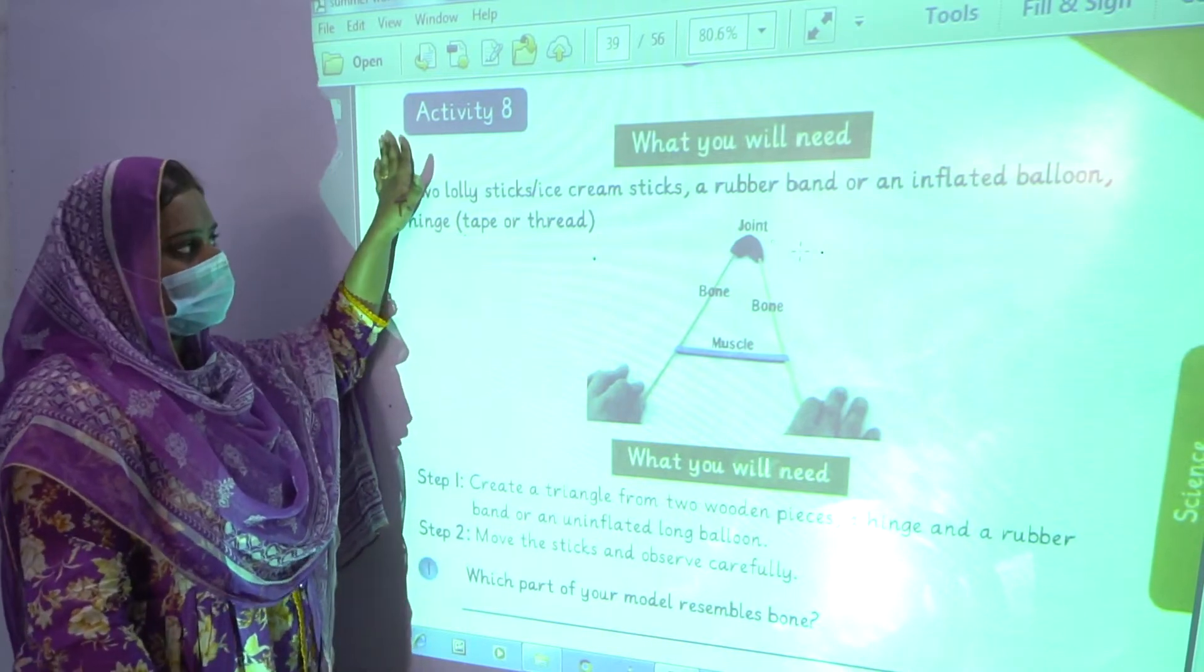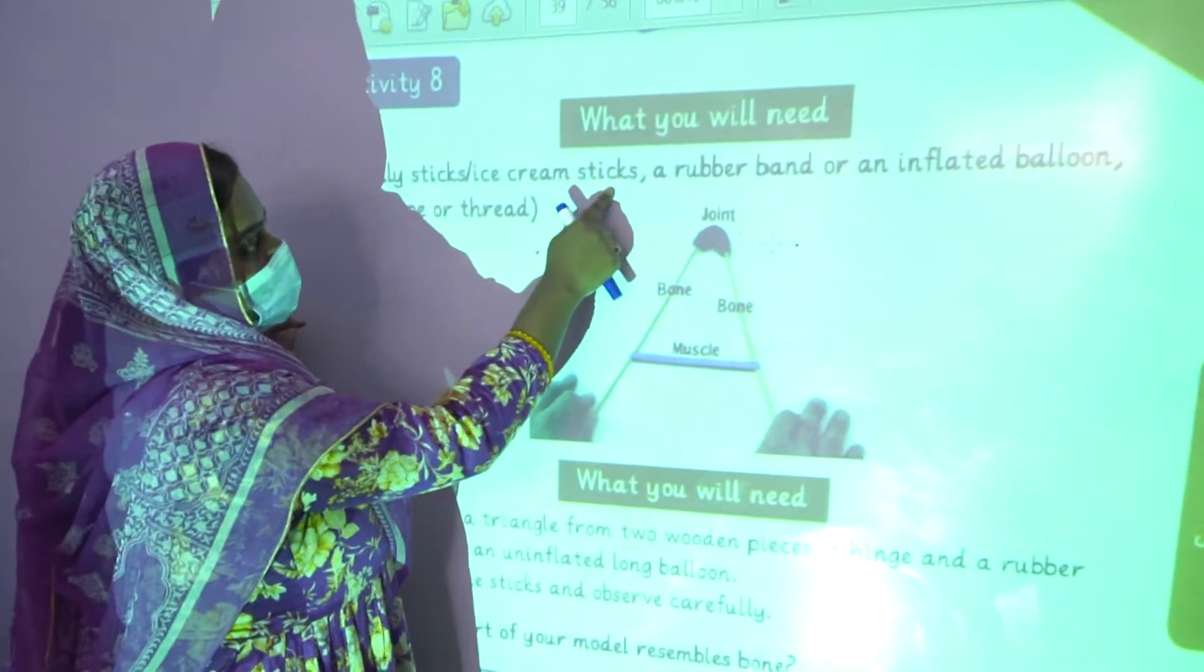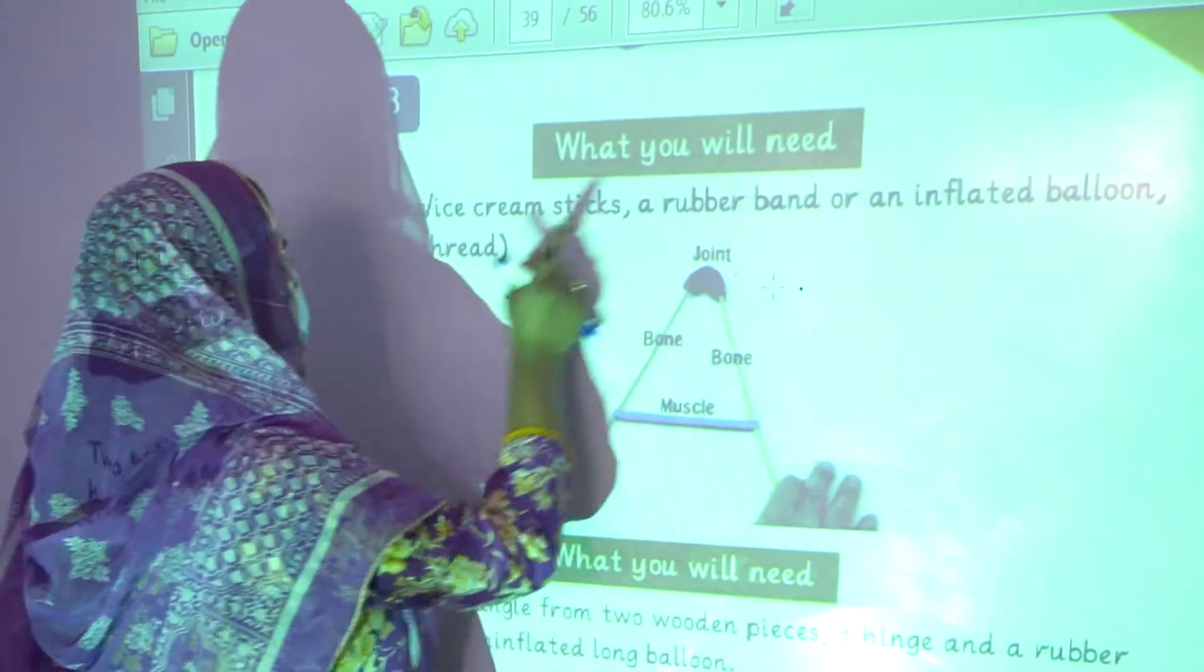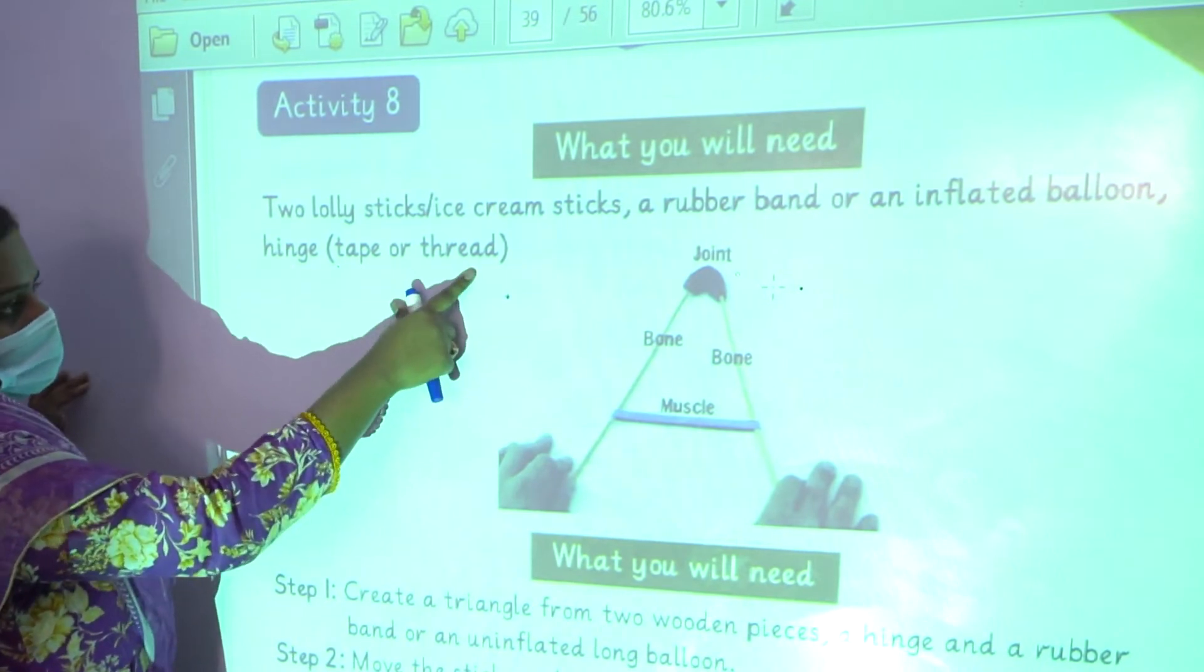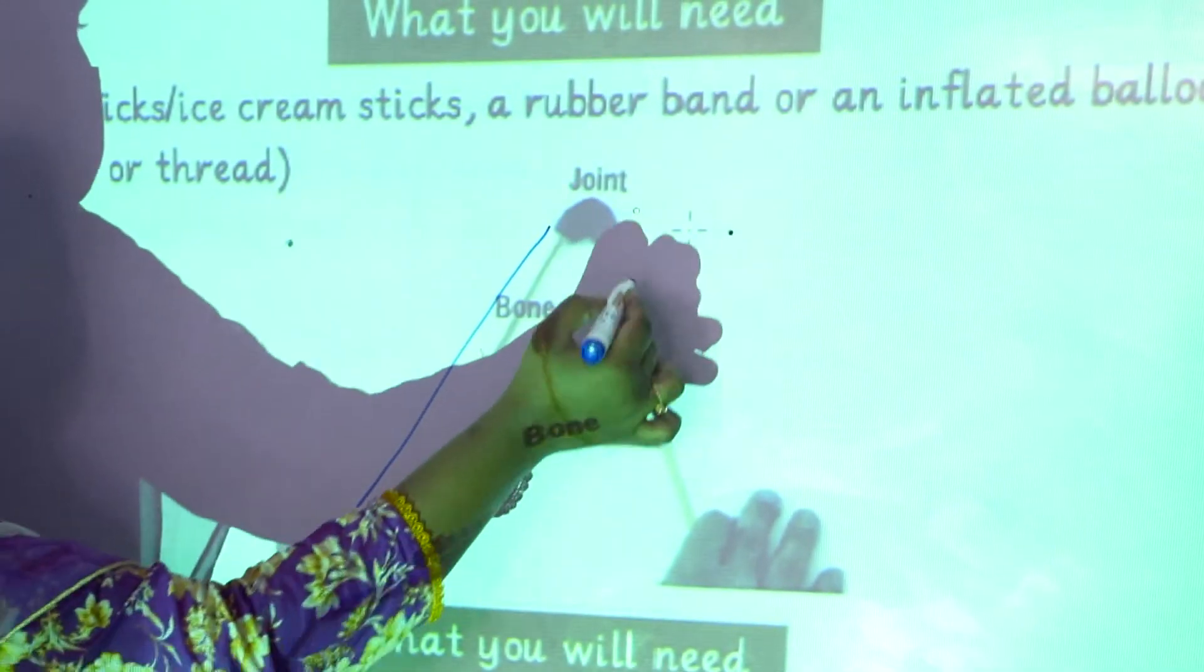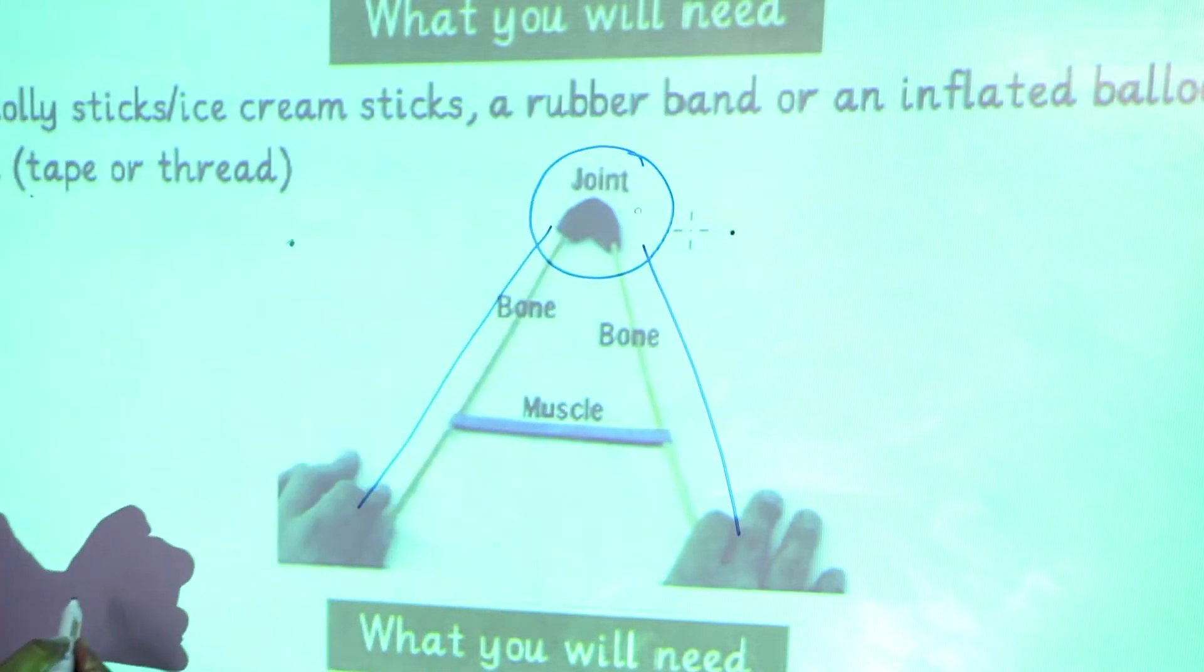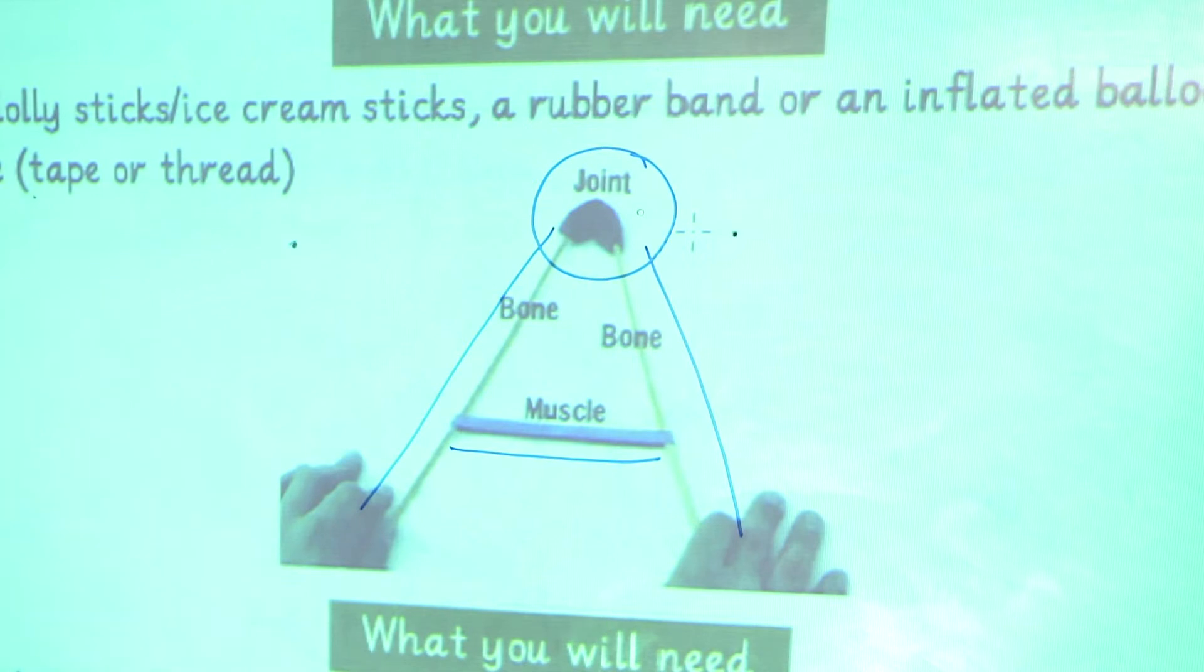This is our activity number 8. What will you need? Two lolly sticks, ice cream sticks, a rubber band or an inflated balloon, tape or thread. You have to take two lolly sticks like this, inflated balloon you have to join it, and a rubber band to stretch it up.